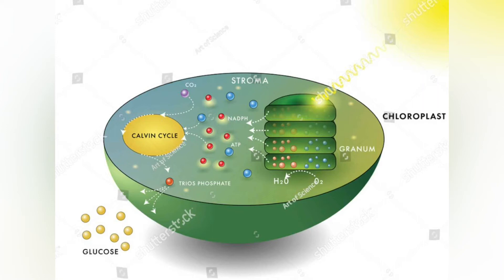The thylakoid membranes of higher plants are composed primarily of phospholipids and galactolipids that are asymmetrically arranged along and across the membranes. Thylakoid membranes are richer in galactolipids rather than phospholipids, and they predominantly consist of hexagonal phase II forming monogalactosyl diglyceride lipid.